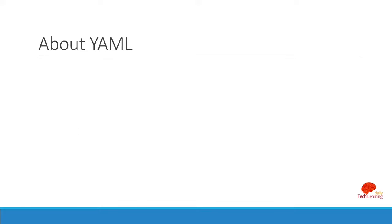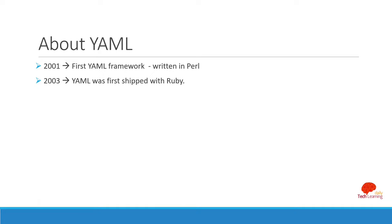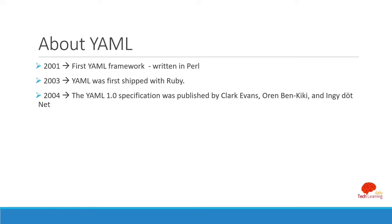About YAML's history: YAML was first introduced in 2001, written in Perl. In 2003 it was first shipped with the programming language Ruby. In 2004 the first specification was published by Clark Evans, Oren Benkiki, and Ingy.net. The current version is YAML 1.2.2, published in 2021, and this is the specification we are going to see.